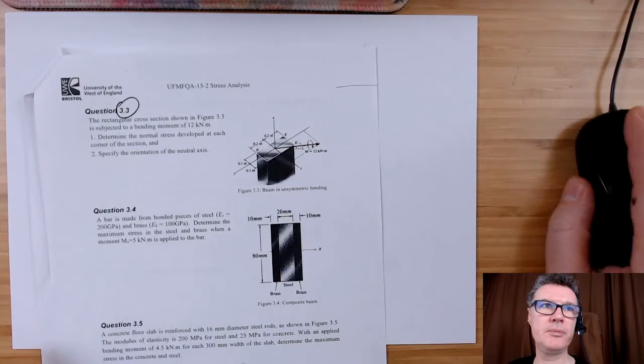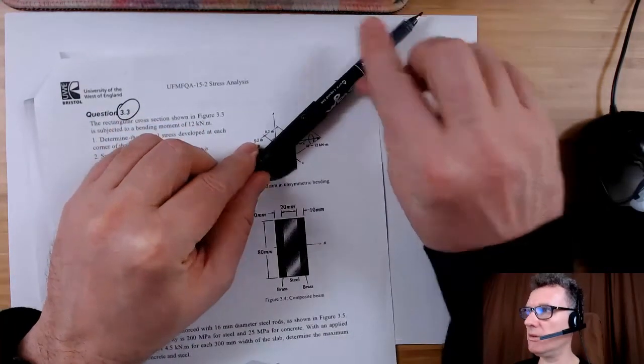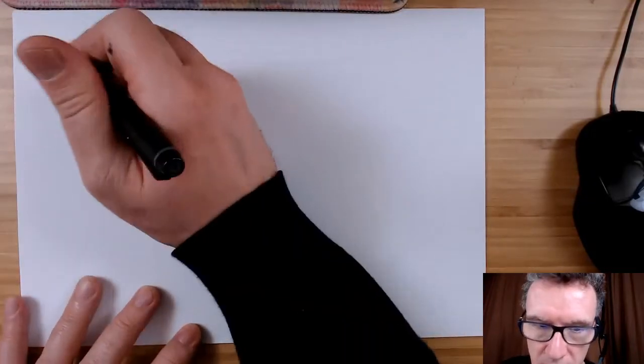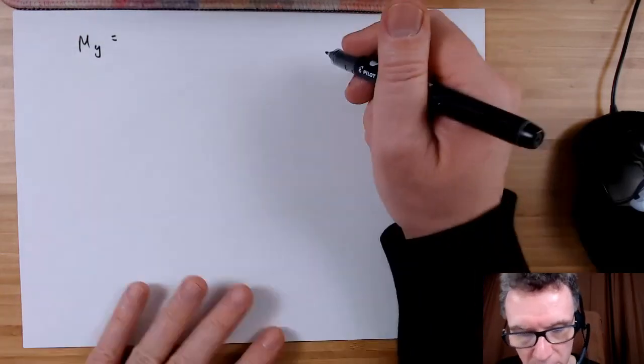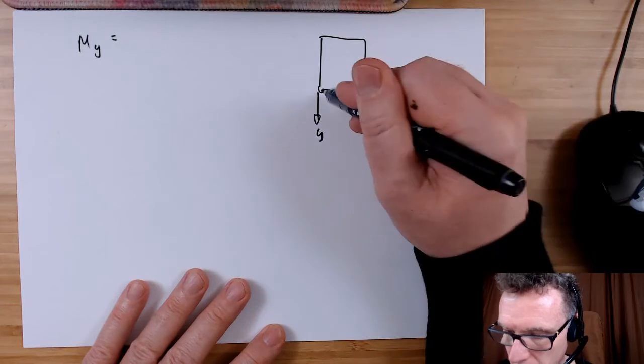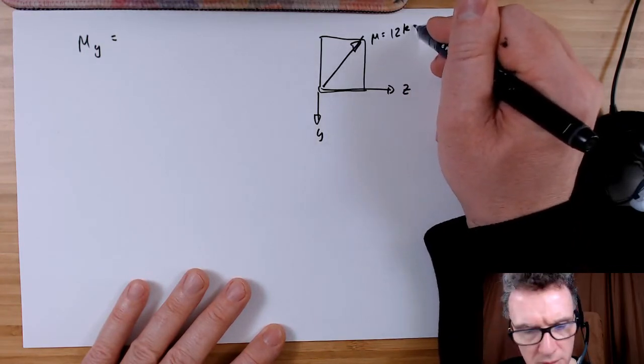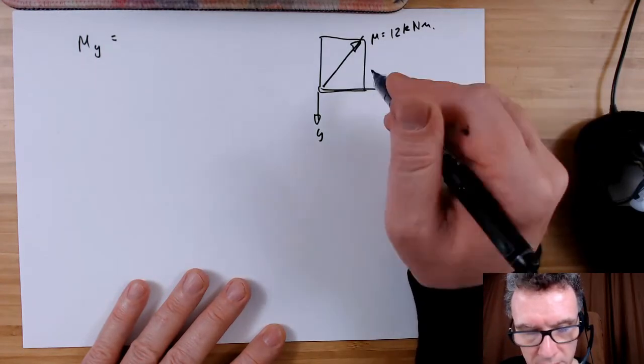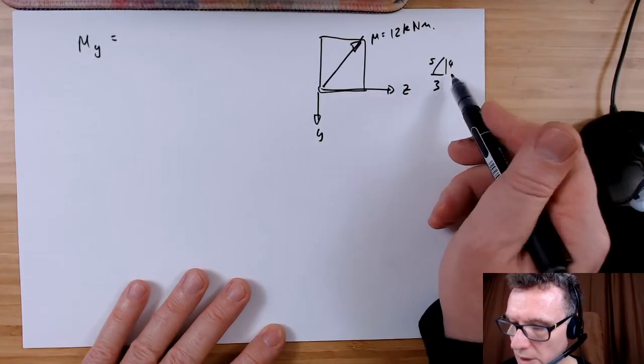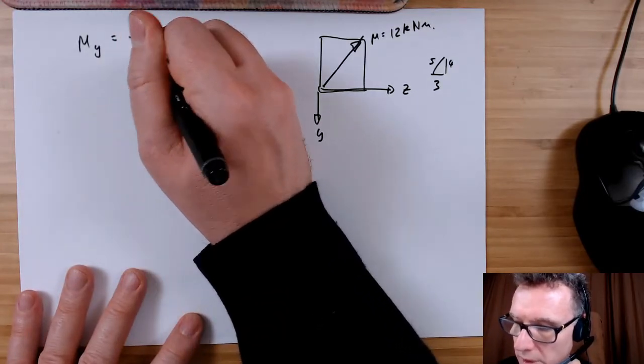Let's start with the tricky one which is the Y. We're going to rotate in this direction, we're happy because it's going clockwise, but Y is going that way so then we make it minus. Looking from above, Y in that direction, Z in that direction, and I've got my M going off in this direction of 12 kilonewton meters. It's a three-four-five triangle. When I make it point in the y direction, we have minus four over five times 12.